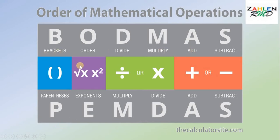What is the meaning of BODMAS? BODMAS means Bracket, Order, Divide, Multiply, Add, and Subtract. While PEMDAS is Parentheses, Exponents, Multiply, Divide, Add, and Subtract. The order of operations is a rule that tells the correct sequence of steps for evaluating a math expression.